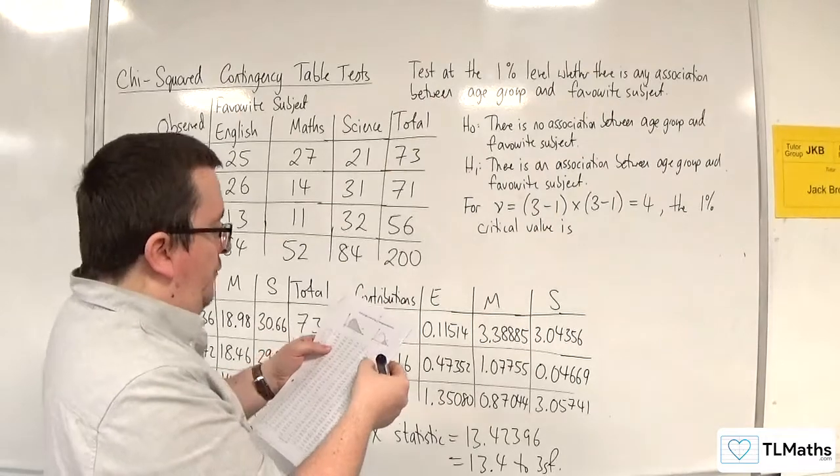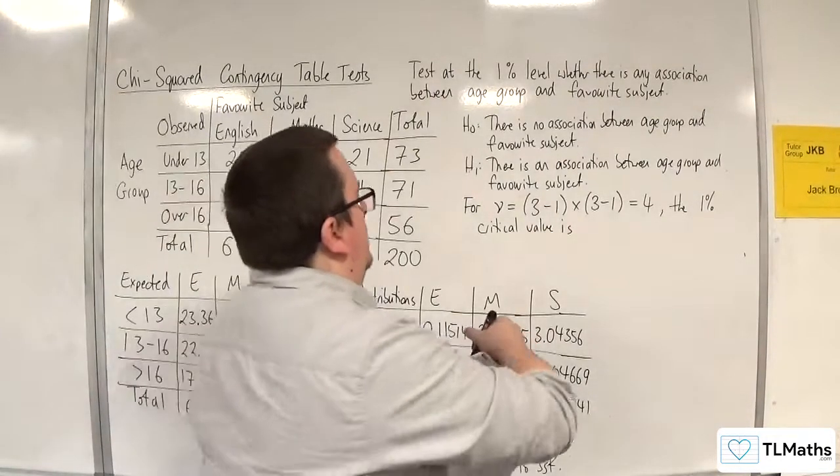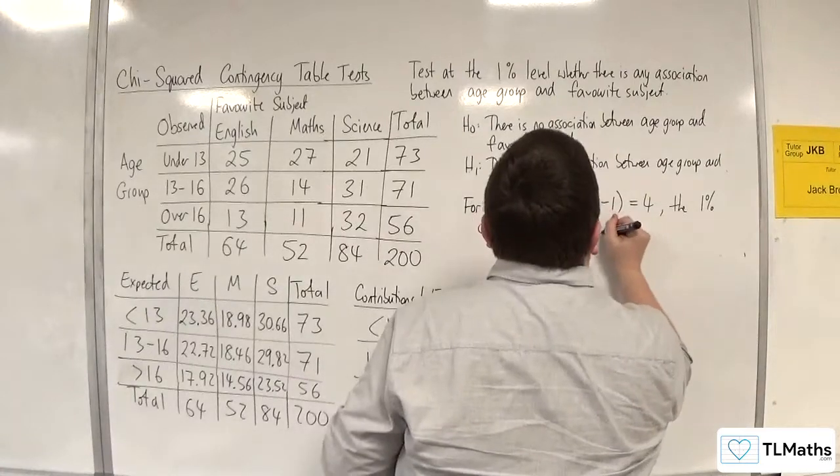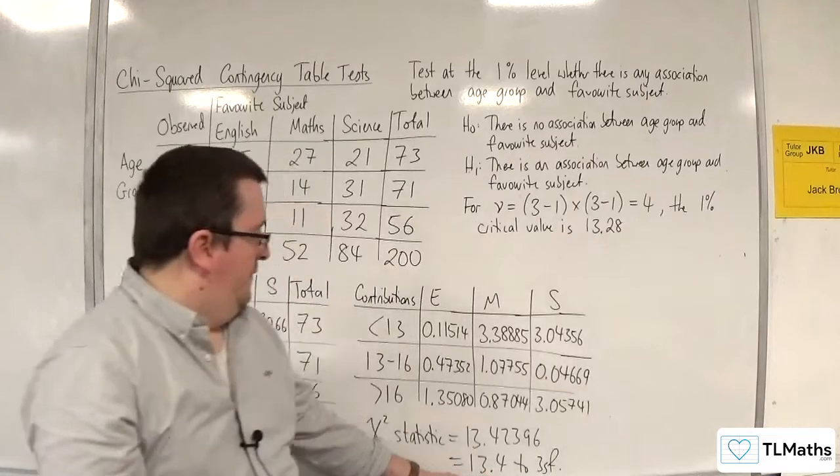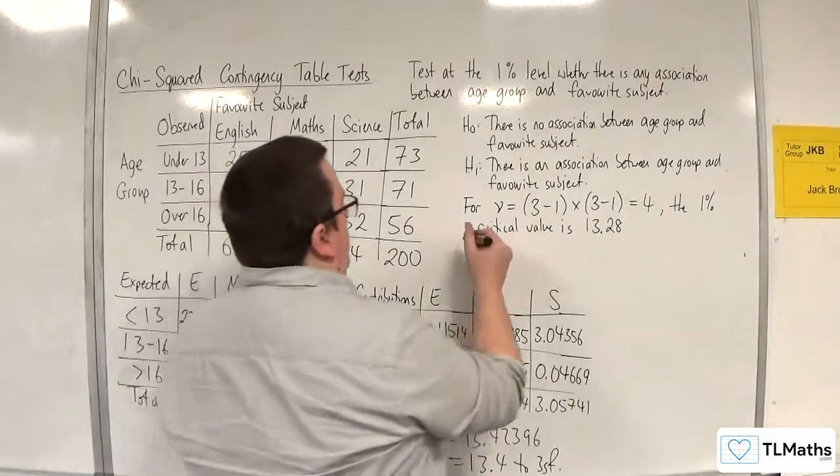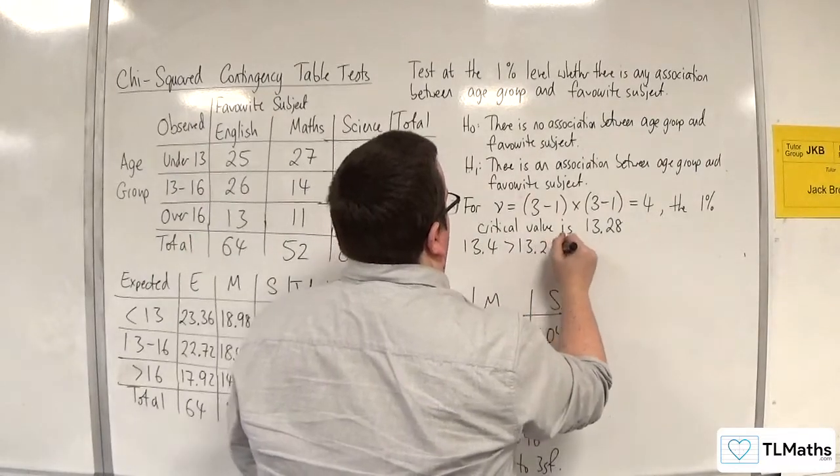And we're going down to nu is equal to 4, and we get 13.28. So 13.28, and our value is just over that. Okay, so 13.4 is greater than 13.28.